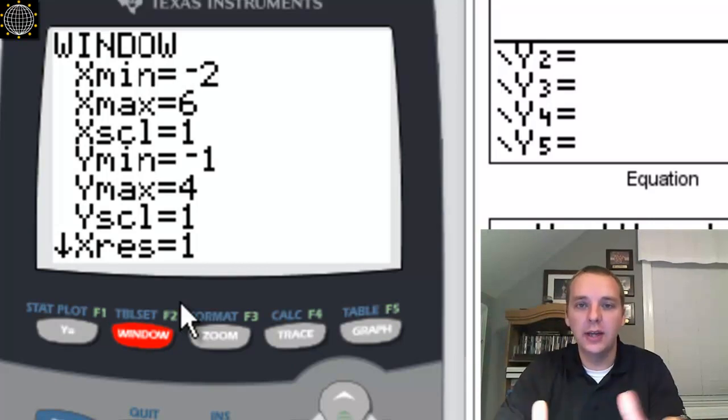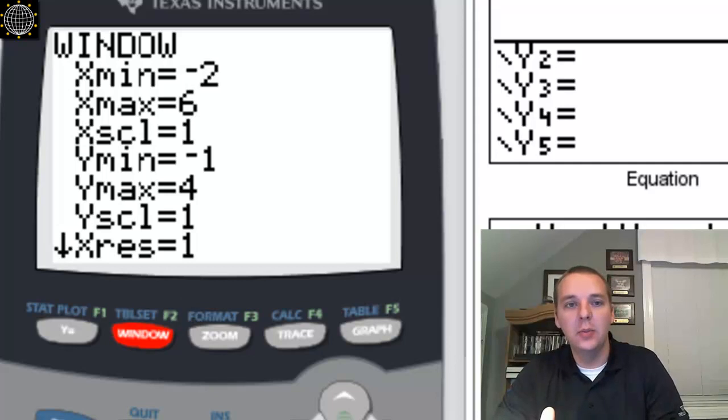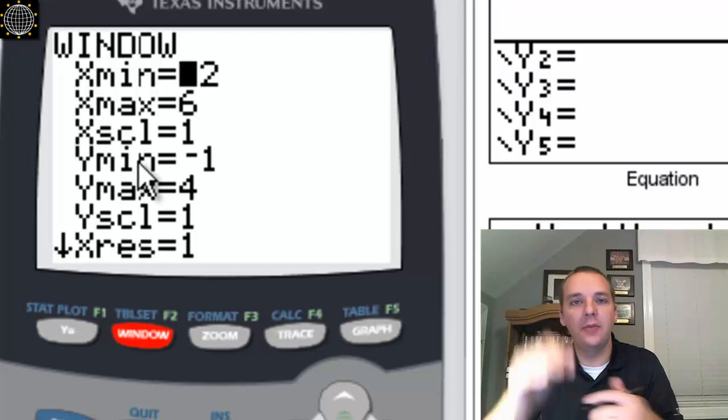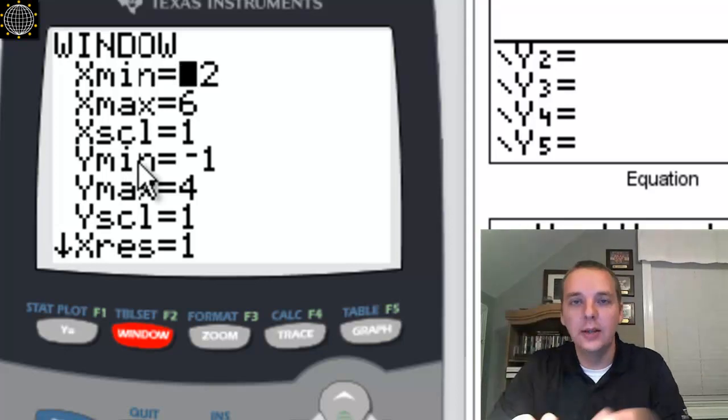So adjust your x axis to be slightly beyond like 0 to 3. I did minus 2 to 6, and then also adjust your y value so you can see the lowest and the highest point that the function attains on that interval there. Okay, so once that's done, push graph.